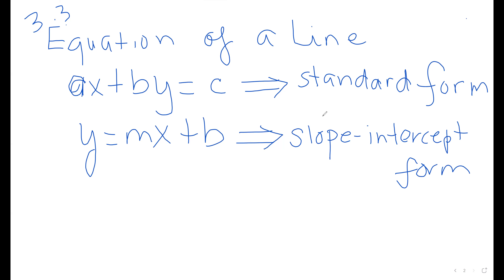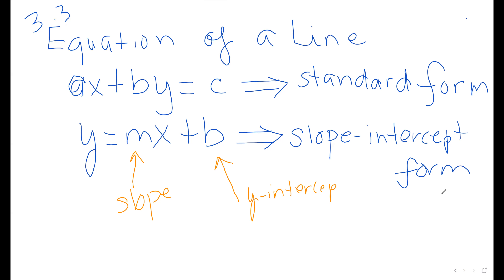The slope-intercept form is called that because you can look at the equation and immediately identify the slope and the intercept. The variable m stands for the slope, and the variable b is the y-intercept. Remember, the y-intercept is the point where x equals zero.